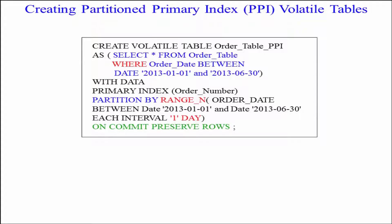Look what I do here. Create volatile table order_table_PPI as — I'm not saying as the order table, not at all, because then I couldn't change anything. I'm saying as open paren select asterisk from order table where the order date is between these two dates. With data, I want a new primary index of order number and I want a partition by range_n.